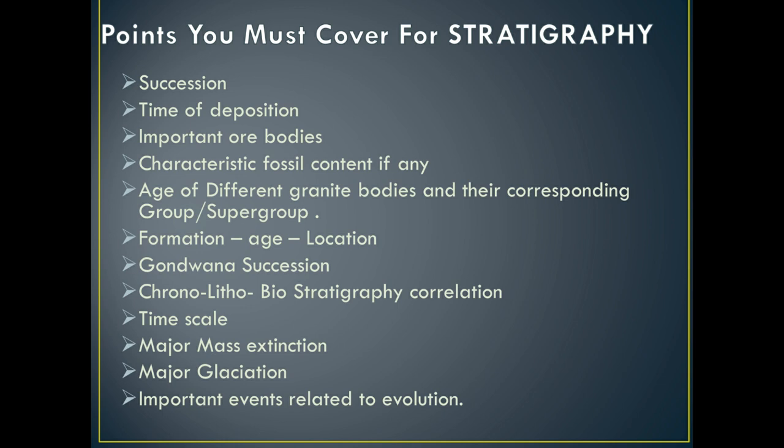Next, we have formation age and their location. For example, we get the Dharwar Supergroup of Archean age, found in the Karnataka area, and the Singhbhum Craton is found in the eastern part in the Bihar-Odisha region. You should have a broad idea about which group is present in which area and what its age is. Whenever you study stratigraphy, don't just try to memorize it — study it with maps. Find the location of each group or supergroup on an India map, along with other groups deposited at approximately the same time, to build a deep understanding.